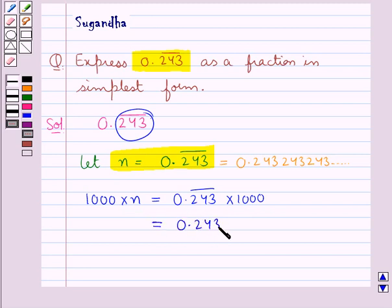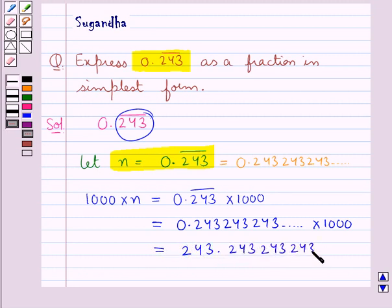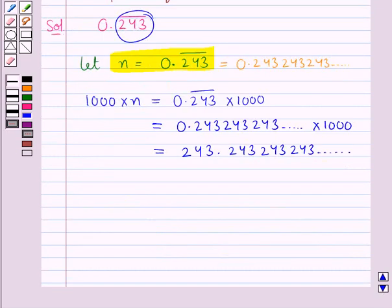We get 1000 multiplied by n equals 0.243 bar multiplied by 1000, which is 0.243, 243, 243 and so on, multiplied by 1000. Multiplying by 1000 shifts the repeating block of digits 3 places to the left, so we get 243.243, 243, 243 and so on, or 1000n equals 243.243 bar.